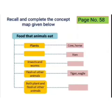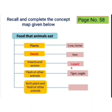Turn to page number 58. Recall and complete the concept map given below. Food that animals eat: Plants — cow, horse. Seeds — hen. Insects and worms — lizards. Flesh of other animals — tiger, eagle. Both plant and flesh of other animals — bear and crow.